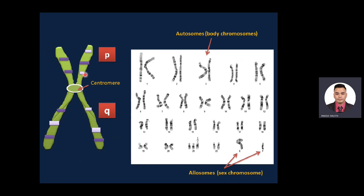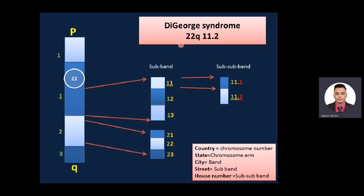If we look more closely at one chromosome, you will see there is a short arm and a long arm. The short arm is marked by 'p' which stands for petite or small, and the long arm is 'q'. This is very important for understanding how genetics identifies the location of a deletion or genetic defect — similar to an address: country, state, city, street, and house number. For example, in DiGeorge syndrome, 'q' is for the long arm and '22' is the chromosome number.